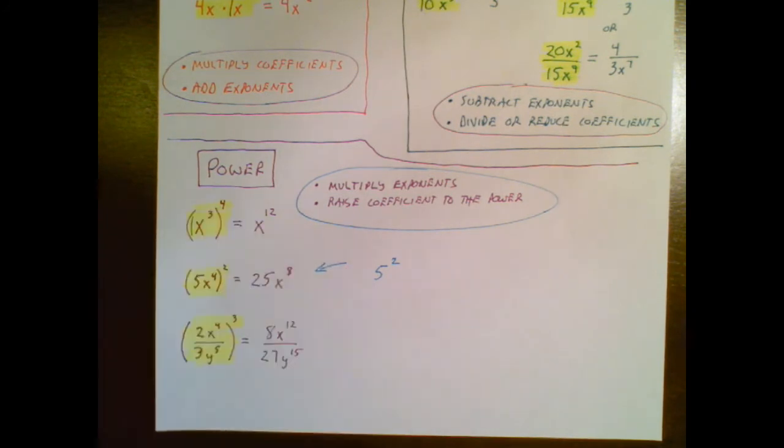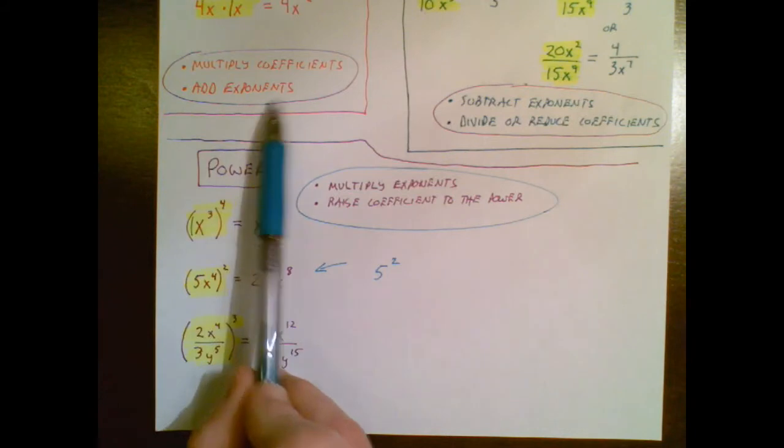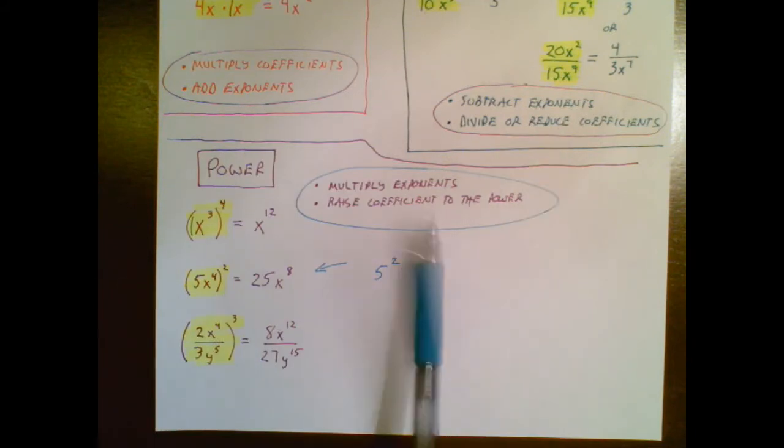Same thing is happening here and here. In the upper one I have a coefficient of 1. In this bottom one the power applies to both the numerator and the denominator and the coefficients and the power applies to the exponent in the top and the exponent in the bottom. So here are your first three sets of rules for multiplying dividing and raising a power to a power but there's more.